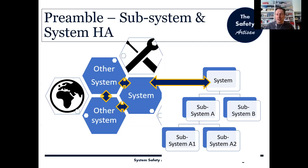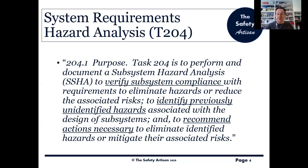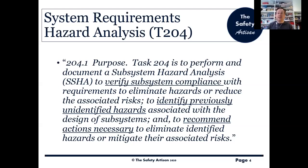There's a hierarchy of subsystems coming together and being integrated to form the overall system. The assumption in the 882 is that we're going to be looking at this subsystem hierarchy bottom upwards. The purpose of the task is threefold: we must verify subsystem compliance with requirements — that is, requirements to deal with risk and hazards; we must identify previously unidentified hazards, which may emerge as we work at a lower level; and we must recommend actions necessary — further requirements to eliminate hazards or mitigate associated risks.